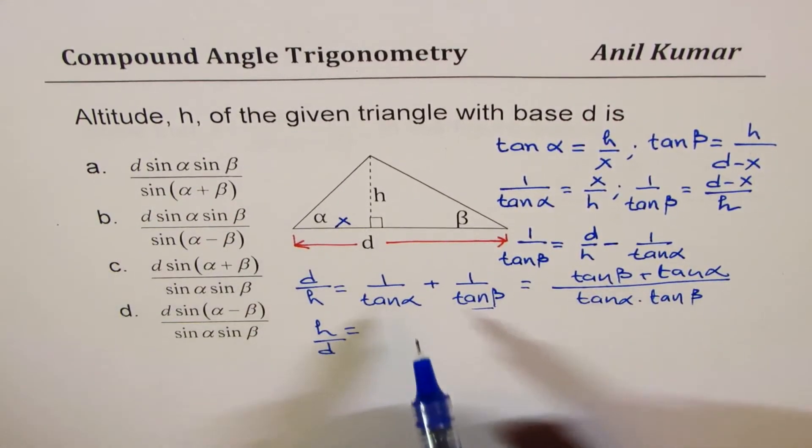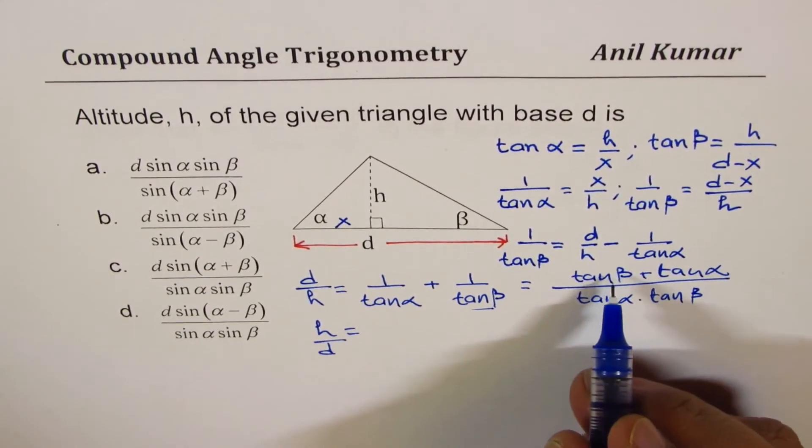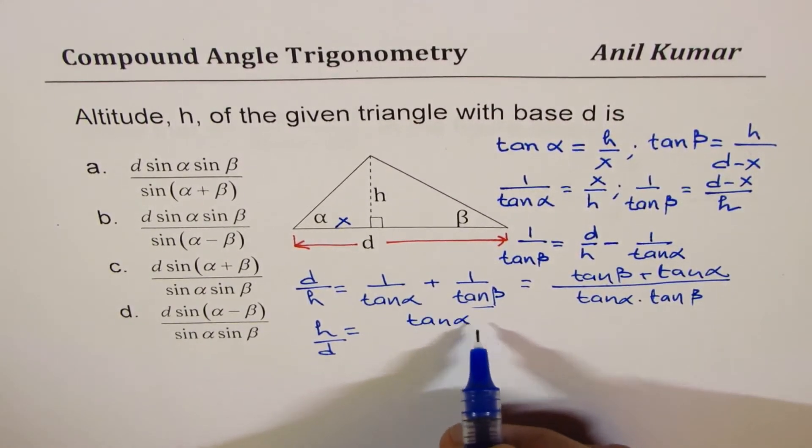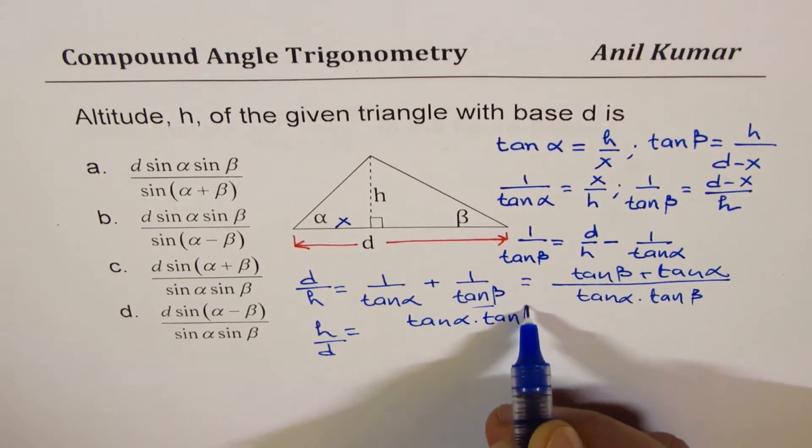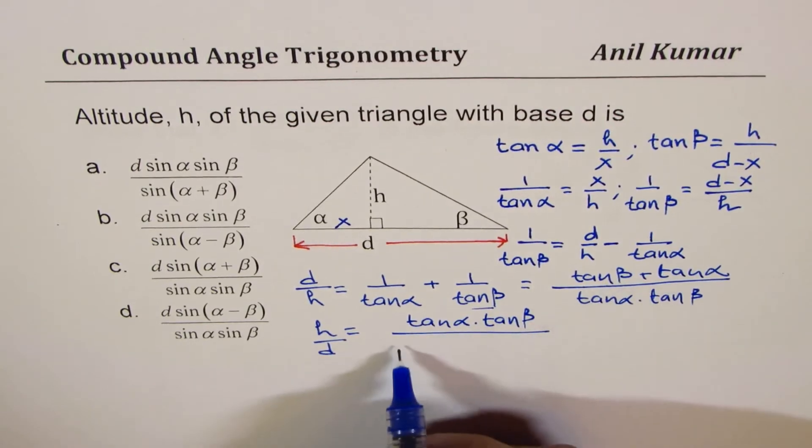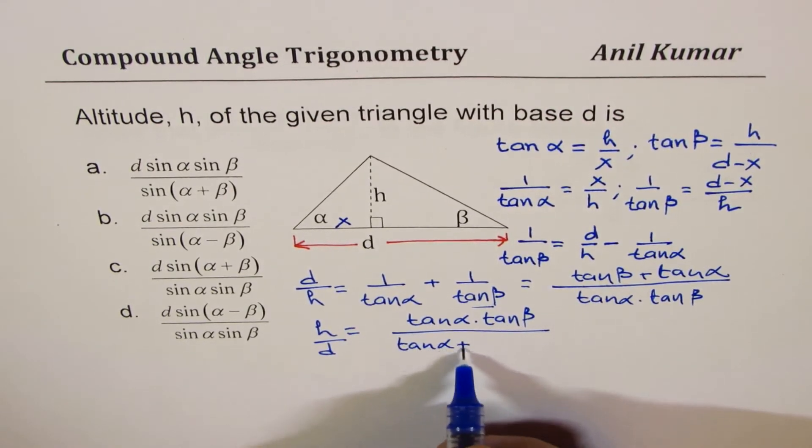So we have tan α tan β over tan α plus tan β. That is how we have kind of written our expression.